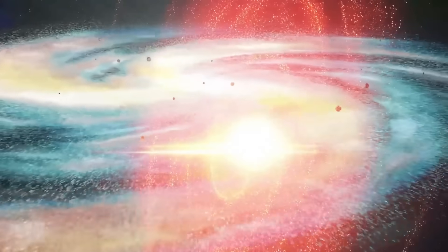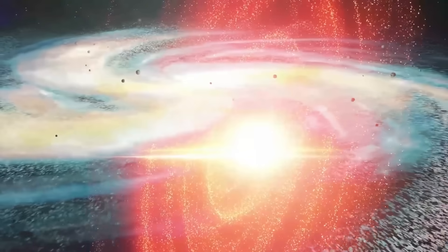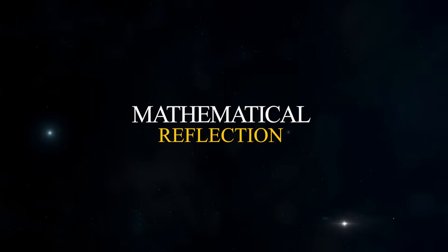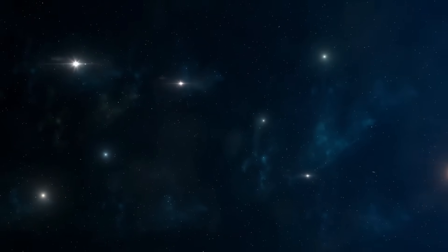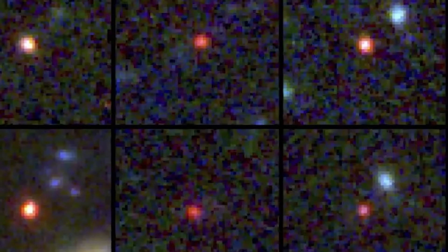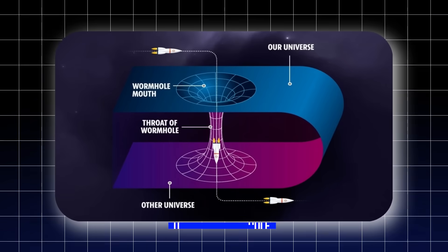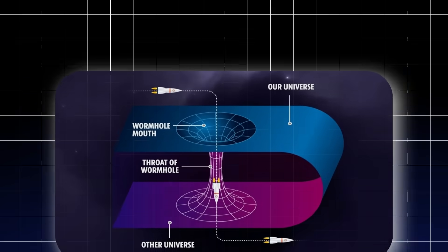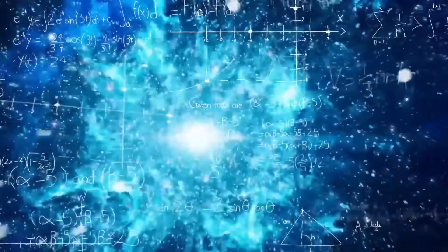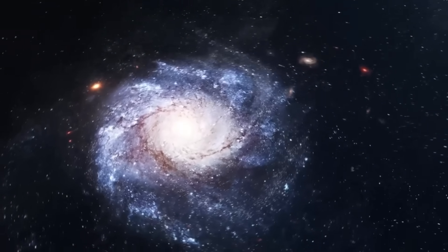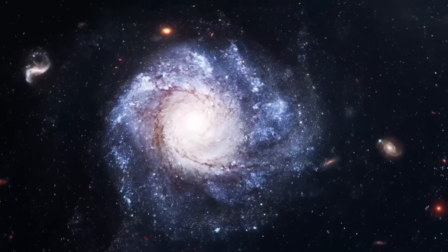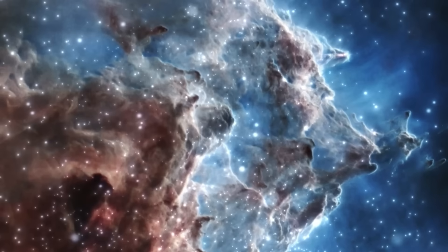If our universe budded off from a parent universe, we might expect to find precisely this kind of mathematical reflection in the infrared spectrum. Kaku points out that if universes can branch off from one another, some form of quantum connection, what he's called an umbilical wormhole, might persist, allowing faint radiation to pass between them. The implications are profound, Kaku suggests. If this signal is verified, we wouldn't just be looking at the edge of our universe - we'd be witnessing the fingerprints of a universe that lived and died before our own was born.